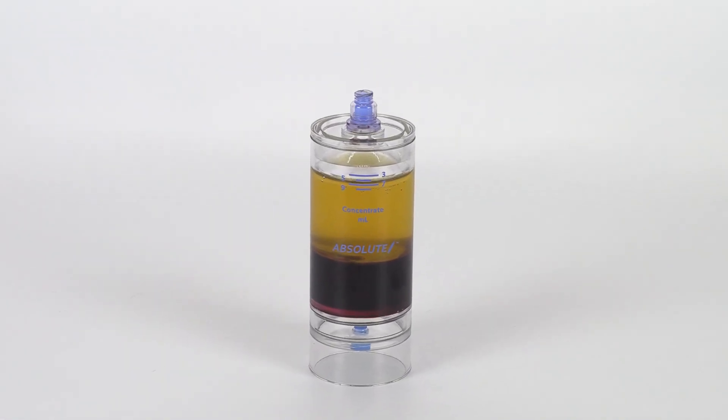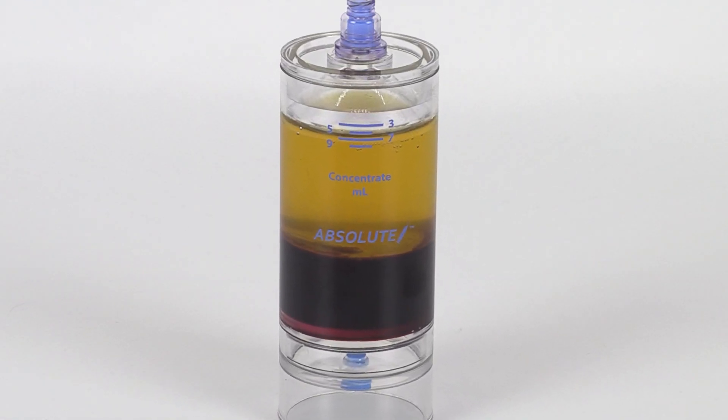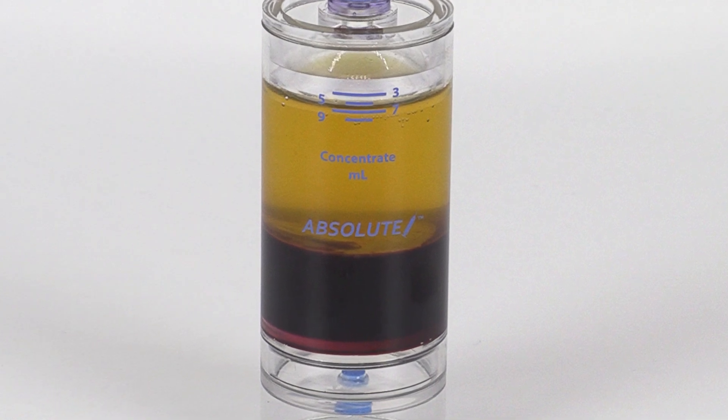After centrifugation, the platelet buffy coat layer will be clearly visible between the plasma and red blood cell layer.